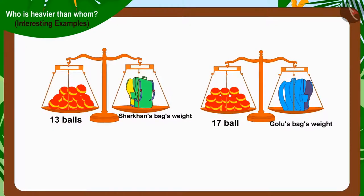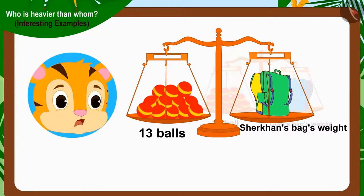And whose bag is the lightest? Exactly! Sher Khan's bag is the lightest because the number of balls equal to the weight of his bag is thirteen, which is the smallest number.